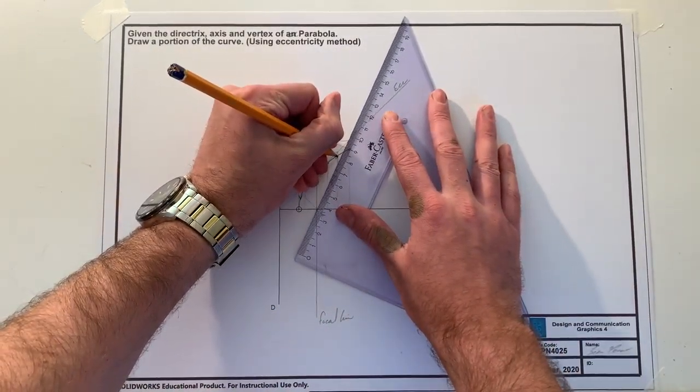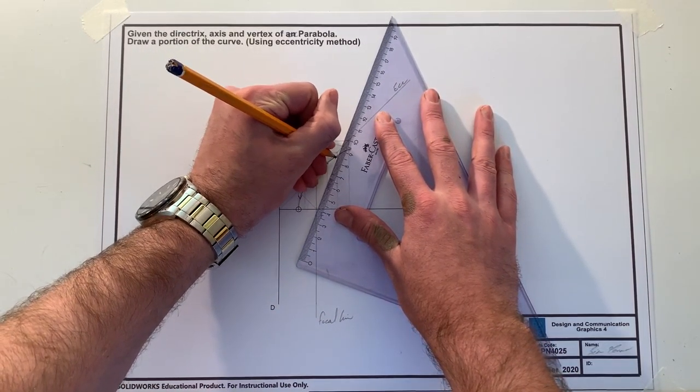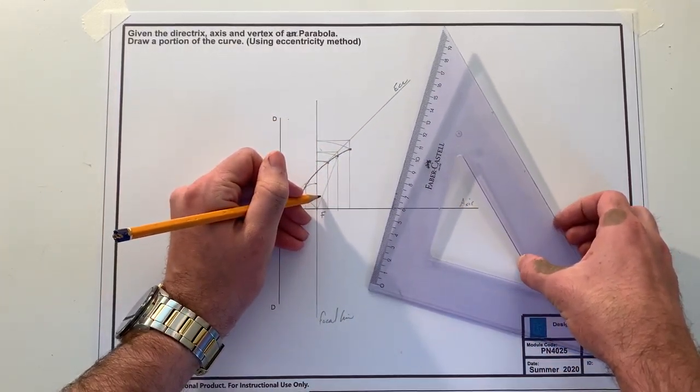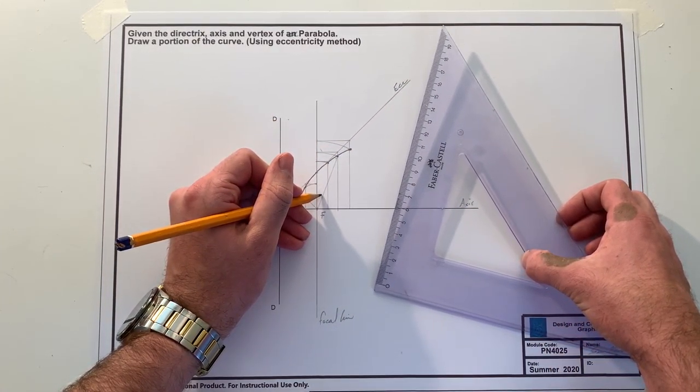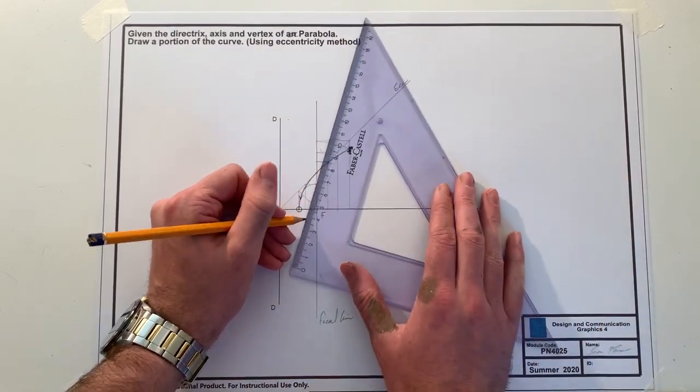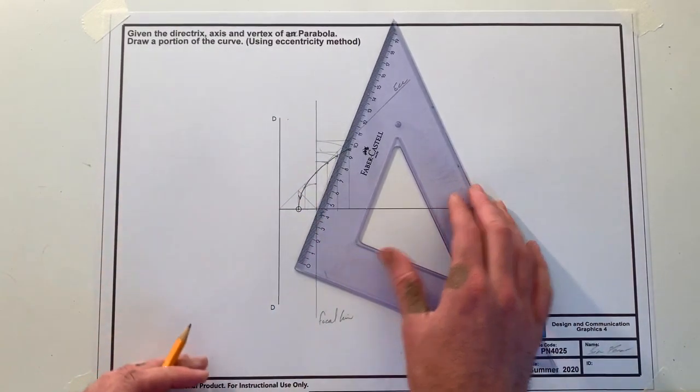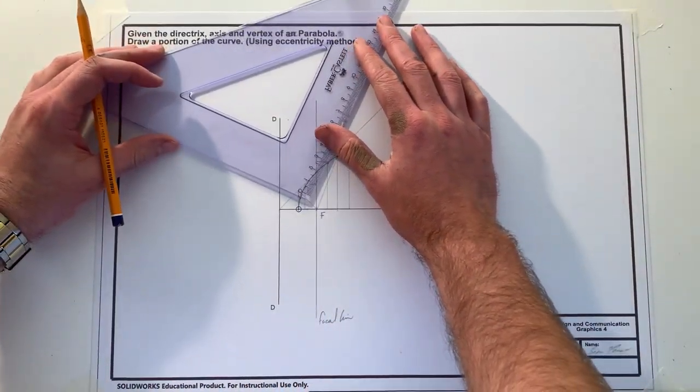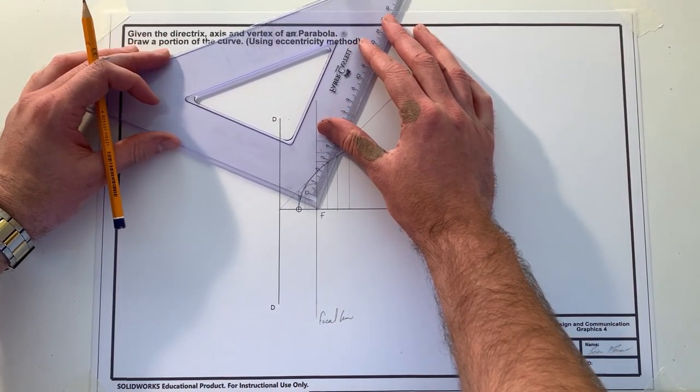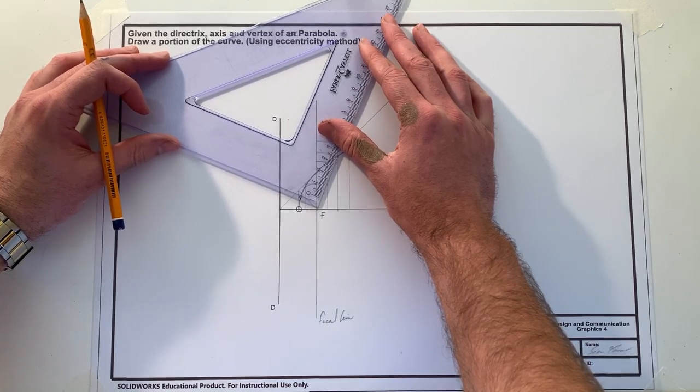And then where it hits the focal point you need a 90 degree line to this line. So this line that we've drawn here we want to go 90 degrees to it, so it's going to go out this direction. To do that, do like so, line it up best as possible.